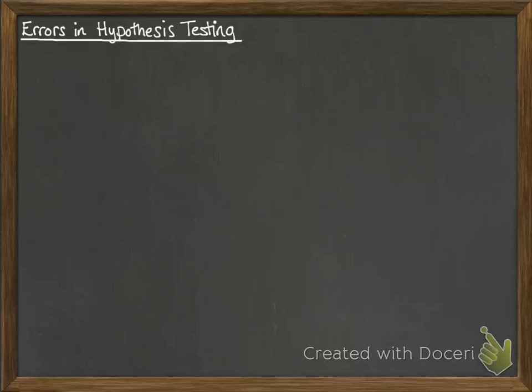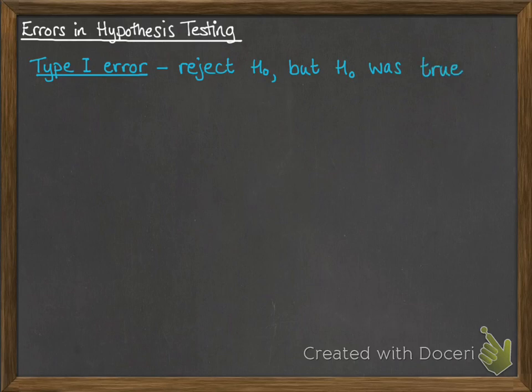There are two types of errors that can happen when you're doing hypothesis testing. So the first one is called a Type 1 error, and this happens when you reject the null hypothesis but it actually was true.